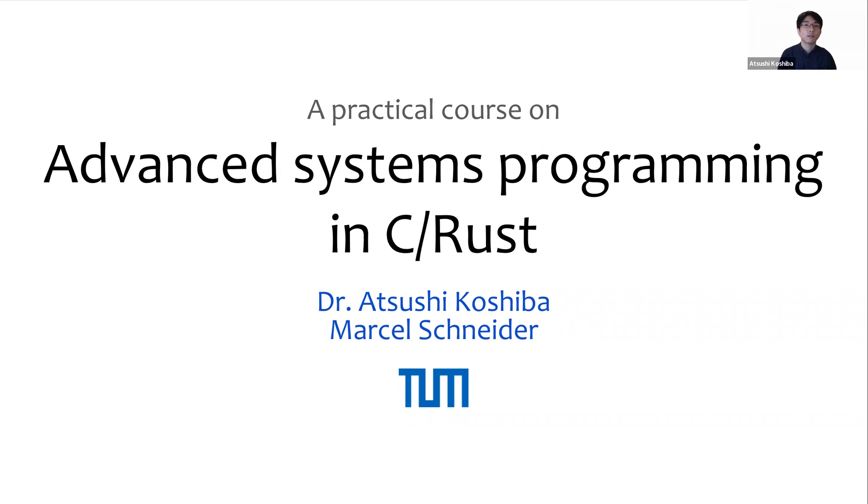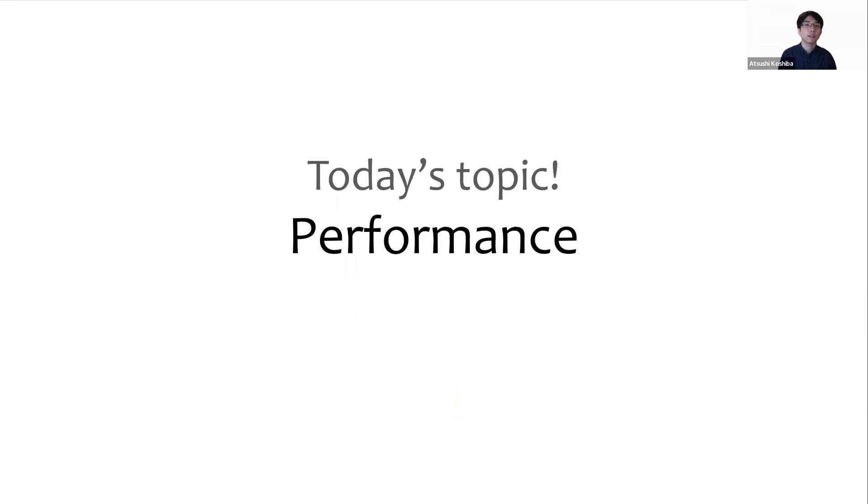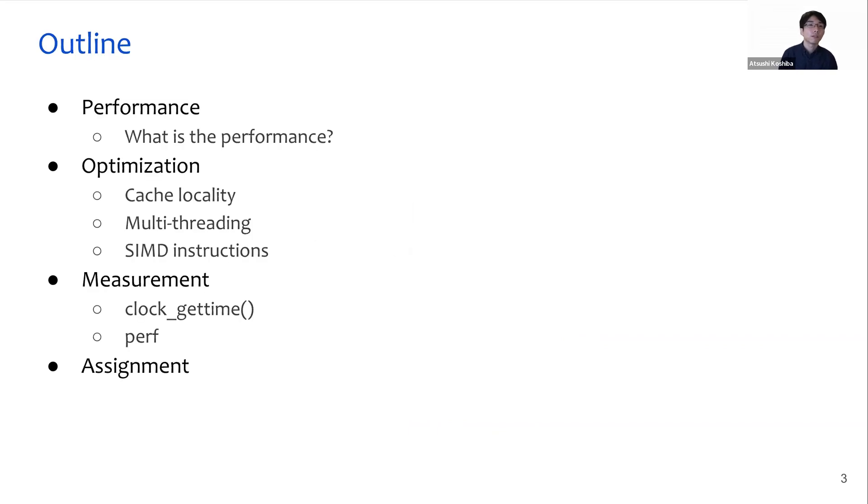Hello everyone. This is our practical course on advanced system programming in C and RUST. This is lecture 7 and today's topic is performance. Here is the outline of this lecture. First, I will explain about performance itself. Next, I will introduce some optimization techniques for improving performance. I will also explain some tools to measure and analyze performance. And lastly, I will briefly explain the assignment of this lecture.